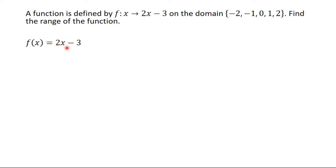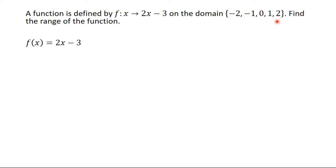The range is the set of possible images in the codomain. So we need to find the image of each domain element: negative 2, negative 1, 0, 1, and 2. For each one we substitute into f(x) = 2x - 3 to find what it gives in the codomain.